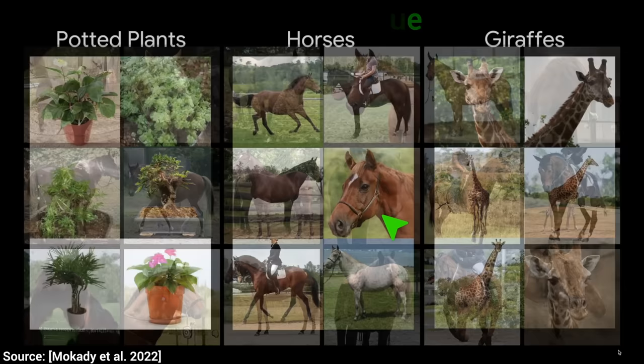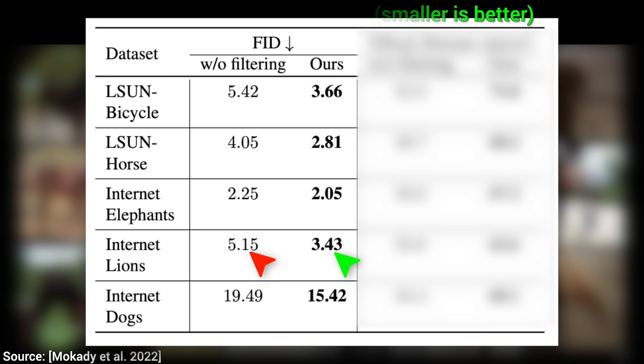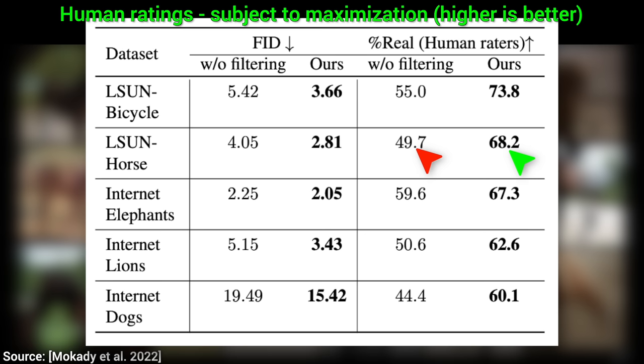How much better? Let's see. Whoa, look at that! Other AIs prefer the results generated with the new filtering step. That's good news, but we are not computers, we are humans. Does this really say anything about what humans prefer? You bet your papers it does. Humans are also loving the results with the new technique, and the difference is remarkable.